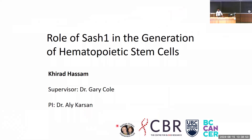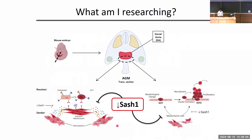My name is Kirata Sam, and this summer I had the pleasure of working with Dr. Gary Cole at the BC Cancer Research Center, where I investigated the role of SASH-1 in the generation of hematopoietic stem cells. Hematopoietic stem cells, or HSCs, are defined by their ability for self-renewal and multipotency. Their importance stems from the fact that once produced, they populate our bone marrow and differentiate into all types of blood cells for the entirety of our lives. It is therefore crucial that we gain a detailed understanding of their emergence in vivo.